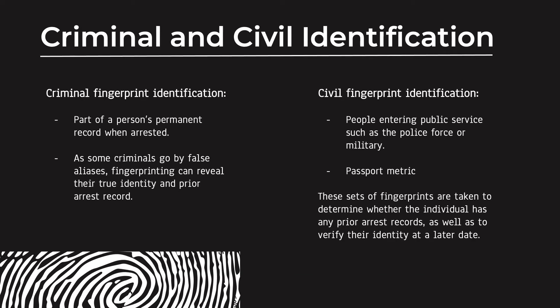Criminal fingerprint identification is part of a person's permanent record when arrested. As some criminals go by false aliases, fingerprinting can reveal their true identity and if they have a prior arrest record. Civil fingerprint identification applies when people enter public service, such as police or military — they take their prints to see if they have a criminal record.